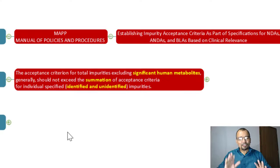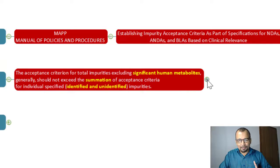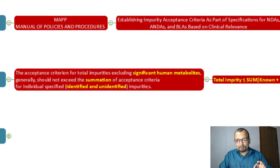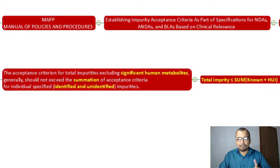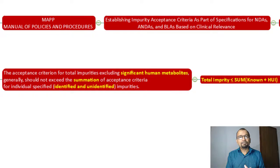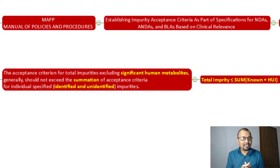The total impurities should be less than or equal to the summation of known plus highest unknown impurities. Here is a simple example using a drug product — it can be a tablet, semi-solid, or injectable. In this example, I have a metabolite with a limit of not more than 3%. Impurity A limit is not more than 1.0%, Impurity B not more than 0.5%, Impurity C not more than 1%.